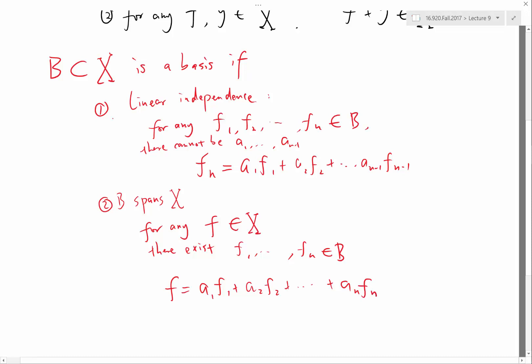So basically what this is saying is that, first of all, B spans the whole space. That means for any function in the space, I can represent it as a linear combination of these basis functions. And two is, B is the minimum set. B cannot be reduced further, because if it can be reduced further, that means I can remove one element from B and still have the spanning property. That means that removed element actually can be expressed as a linear combination of the remaining elements, which does not satisfy the linear independence property. So a basis is like the minimum spanning set of a linear function space. Does it make sense?